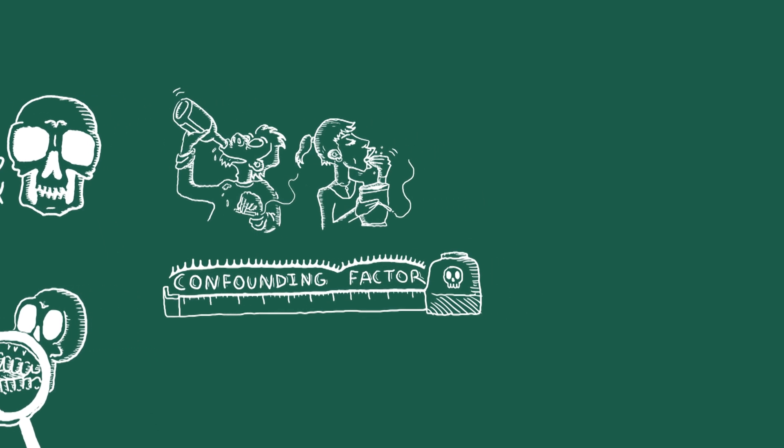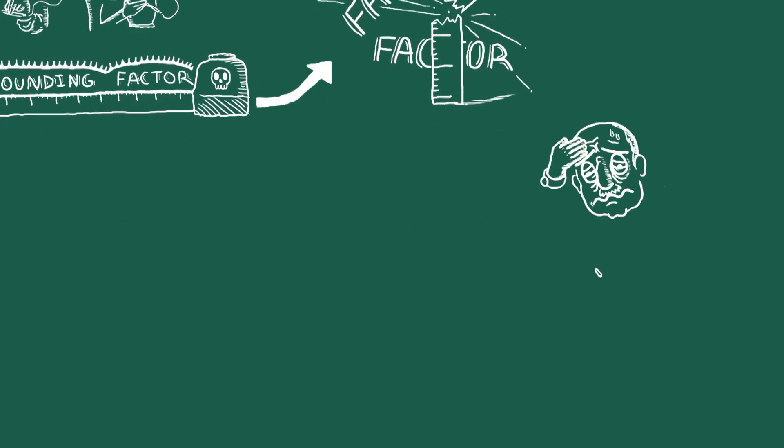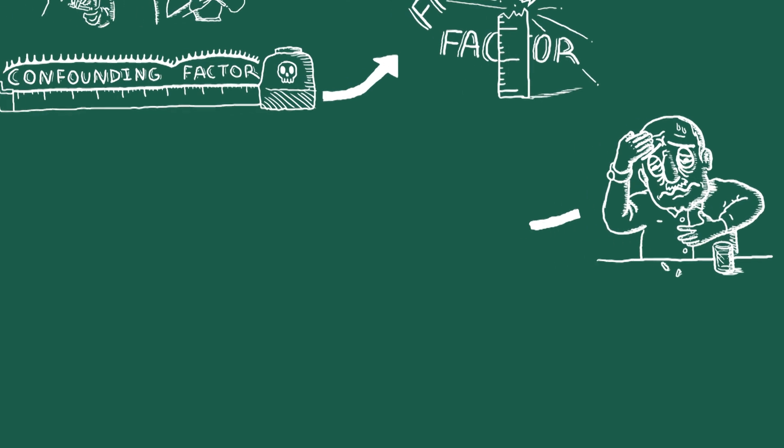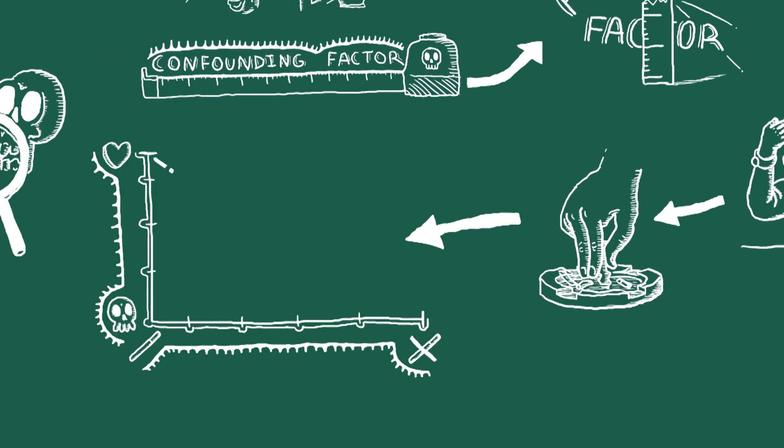But even if we measure these confounding factors, we may not measure them perfectly or there may be others we haven't measured. Also, as people become ill they may cut down or give up smoking, which could wrongly suggest that reduced smoking leads to worse health.